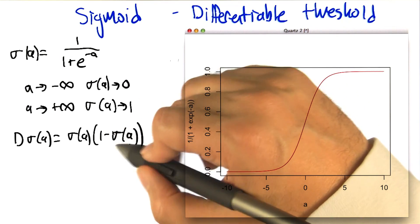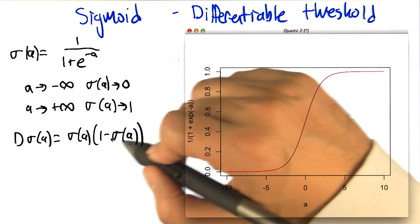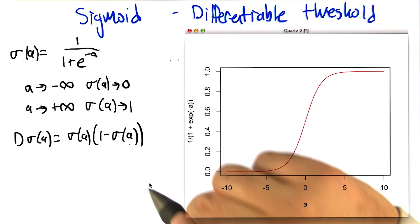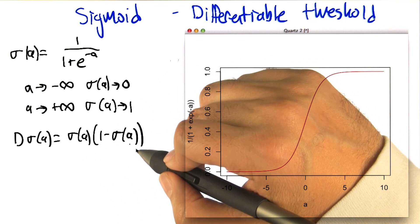So if you have the sigma function in your code, there's nothing special that you need for the derivative. You can just compute it this way.